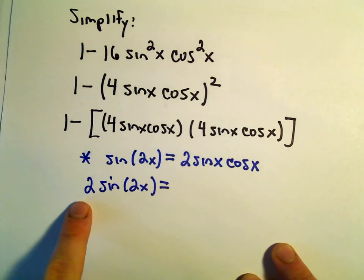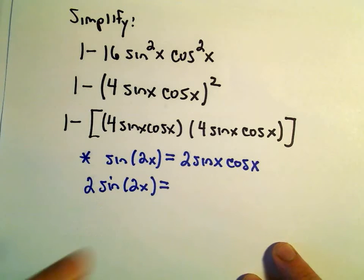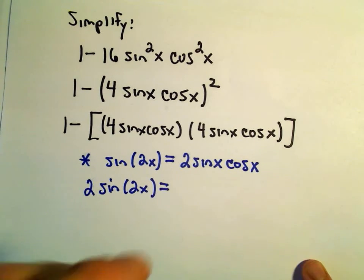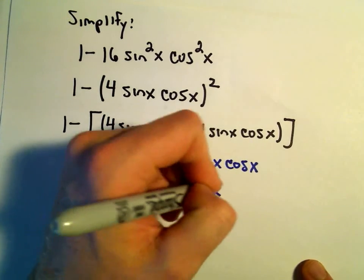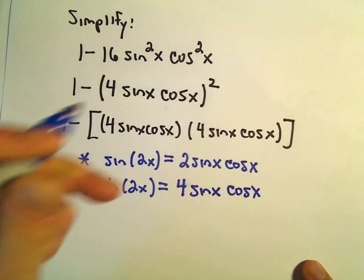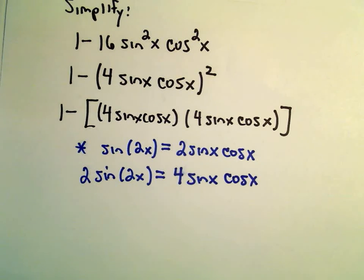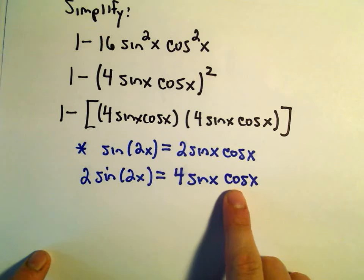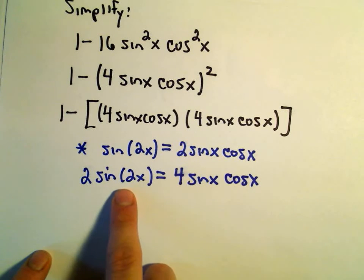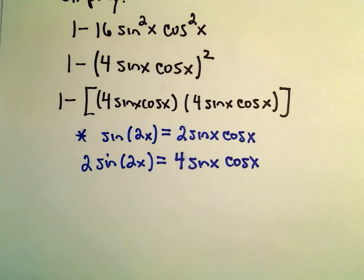If I multiply the left side by 2, I'll get 2 sine of 2x. If I multiply the right side by 2, well, I'll get 4 sine x times cosine x. So now what I'm going to do is simply replace each 4 sine x cosine x with this value 2 sine of 2x.